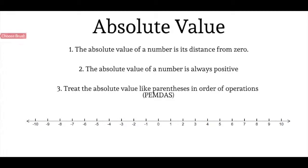The first point to know is that the absolute value of a number is its distance from zero. We're going to look at this on the number line in just a minute. The second point is that the absolute value of a number is always going to be positive. The third point is that when you're doing problem solving, you treat the absolute value just like a set of parentheses in the order of operations, aka PEMDAS.